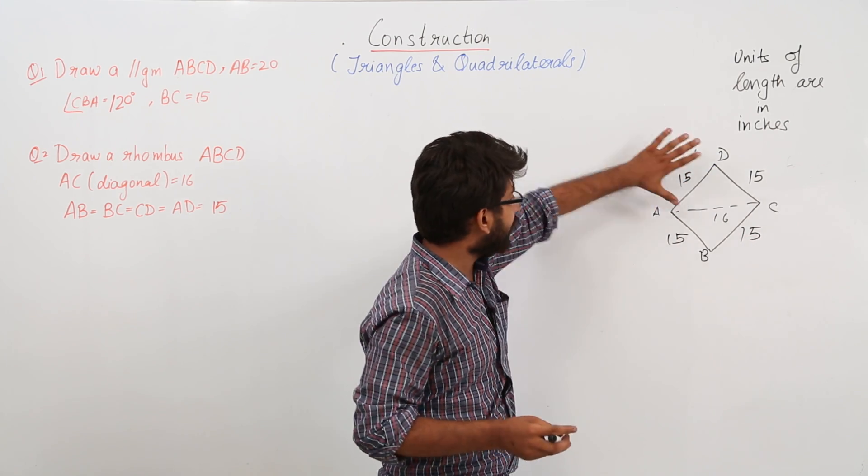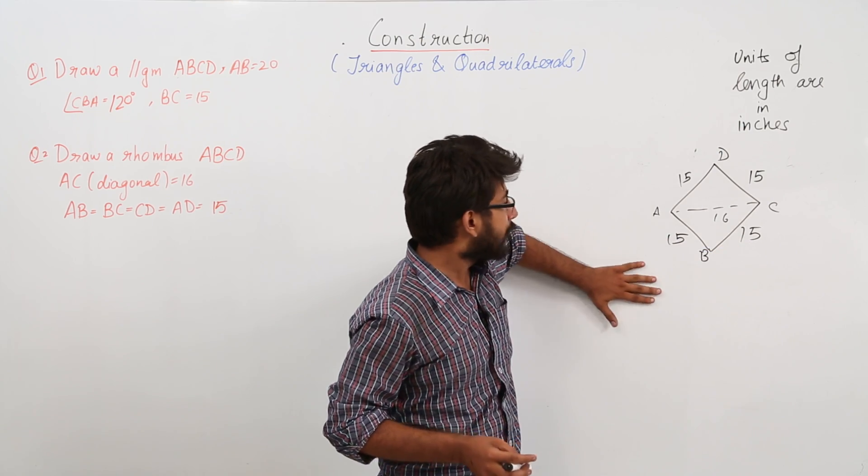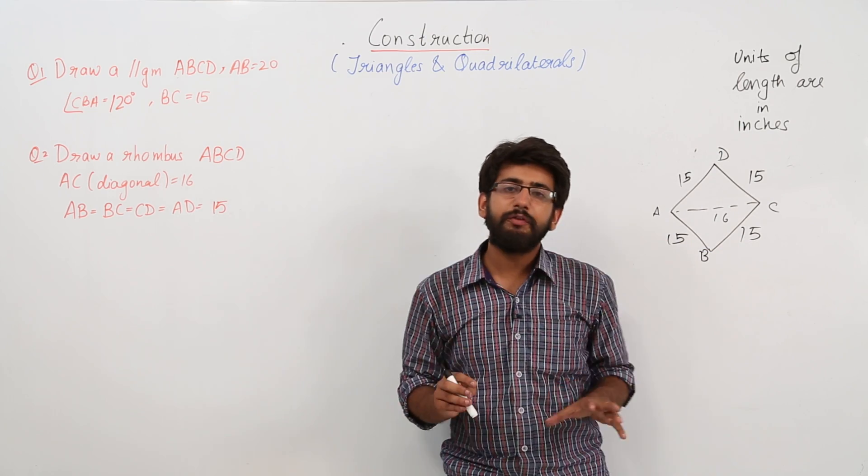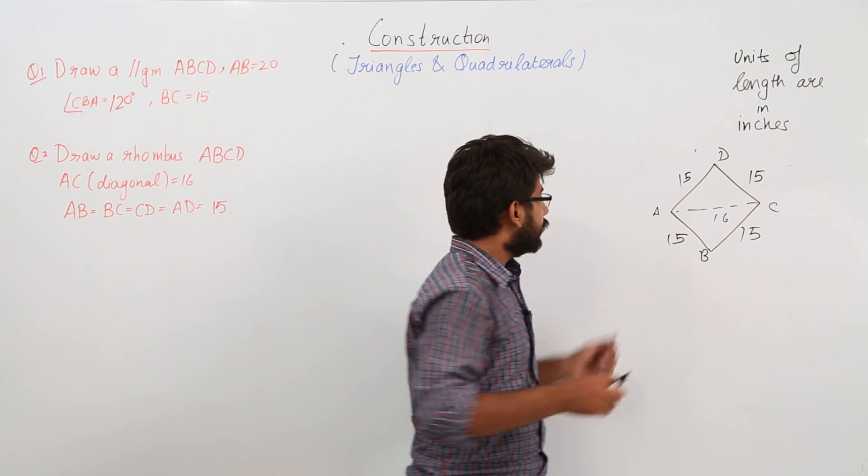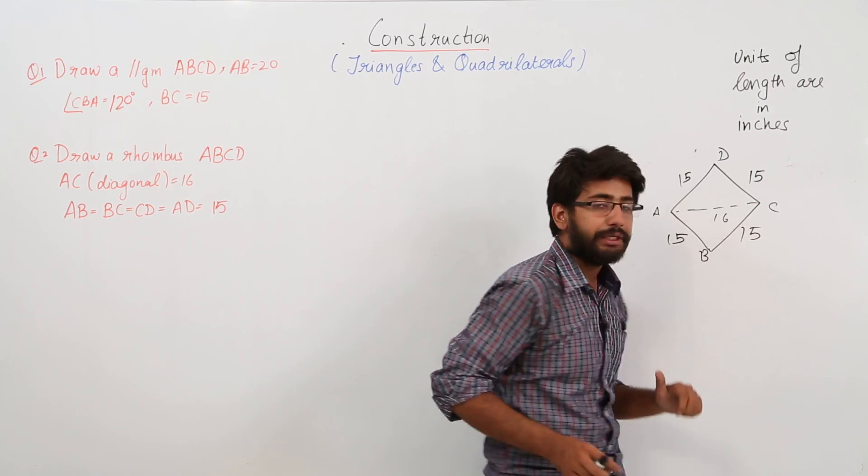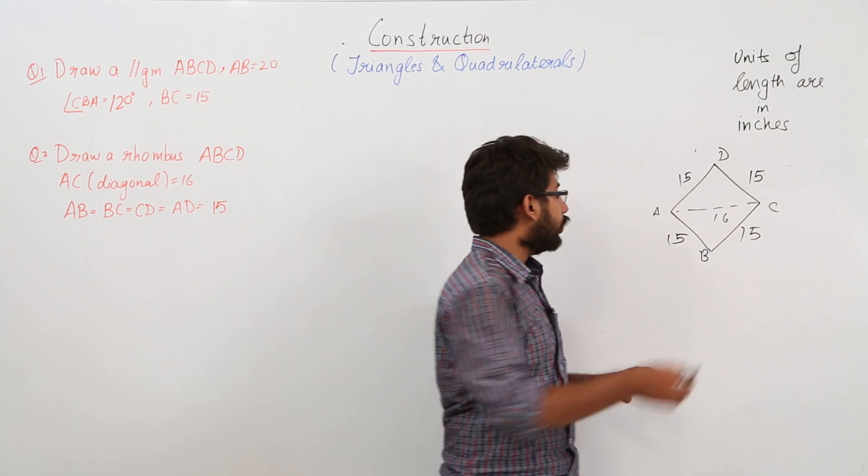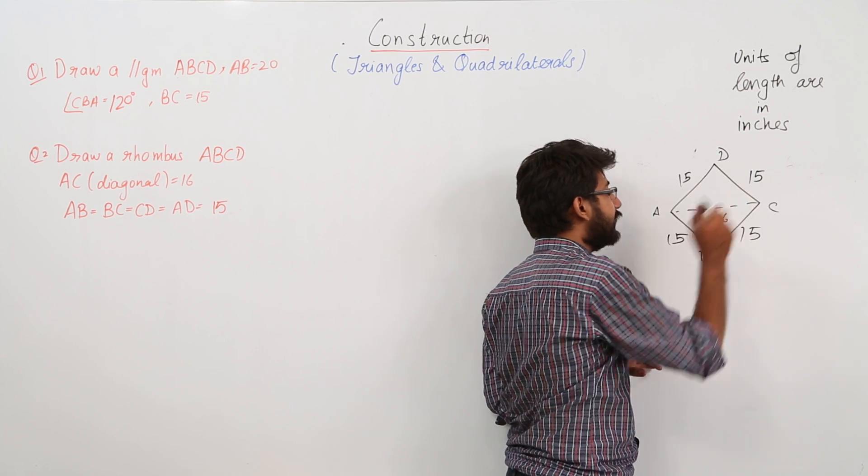So what we will do: we know that all these are 15, so the best way would be that let us first find out the vertices A and C, that means let us first construct this side AC or the diagonal AC, and then with the help of compass you can find point D and B.